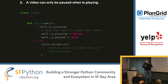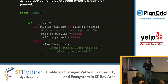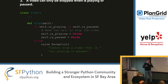In the case of pause — a video can only be paused when it's playing — we check if the video is playing. In that case, we make the call to pause the video, update our attributes; otherwise, we raise an exception saying you cannot pause a video that is not playing. For rule number three, a video can only be stopped when it's playing or paused — we check if the video is playing or paused, make the call to stop the video, update the attributes, and raise the exception if not.